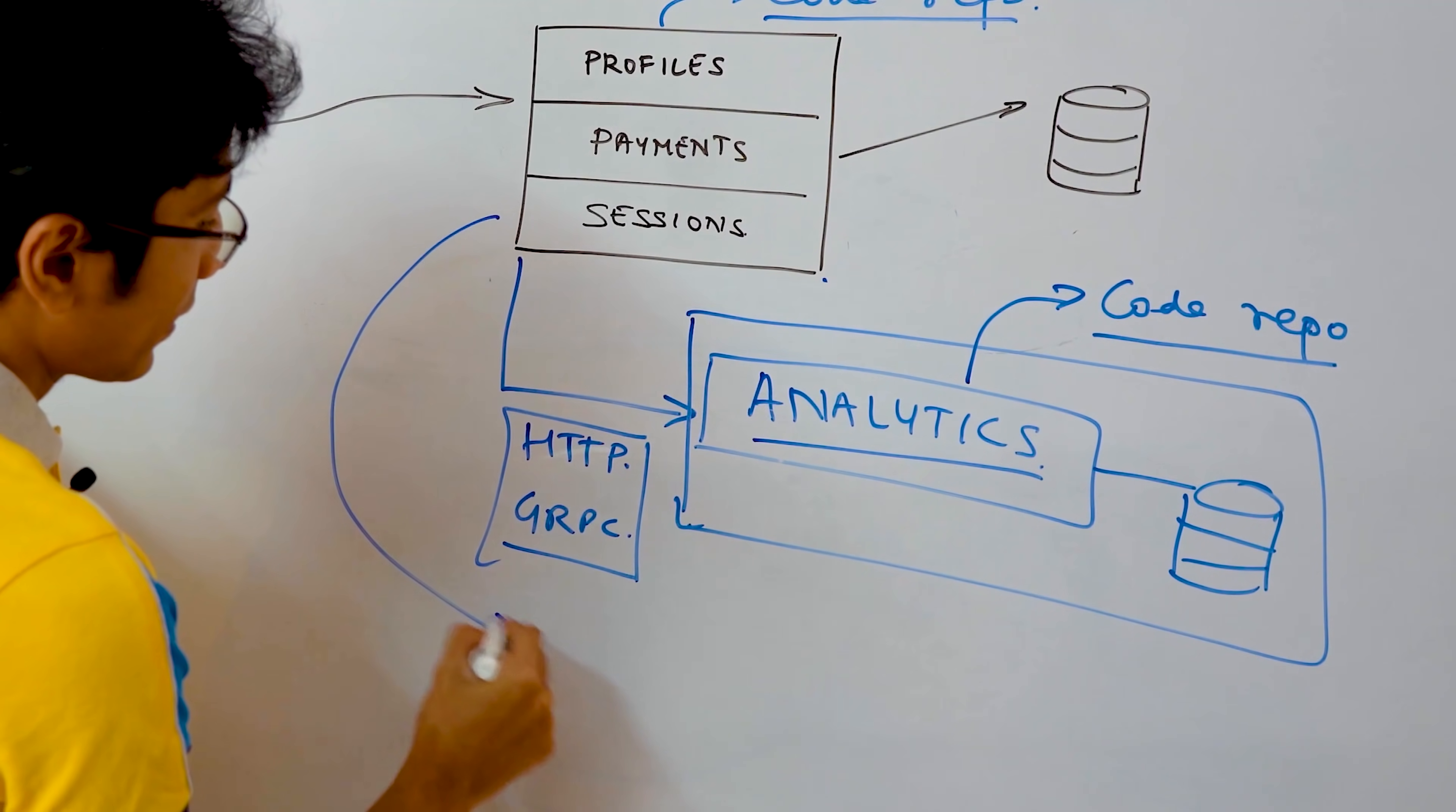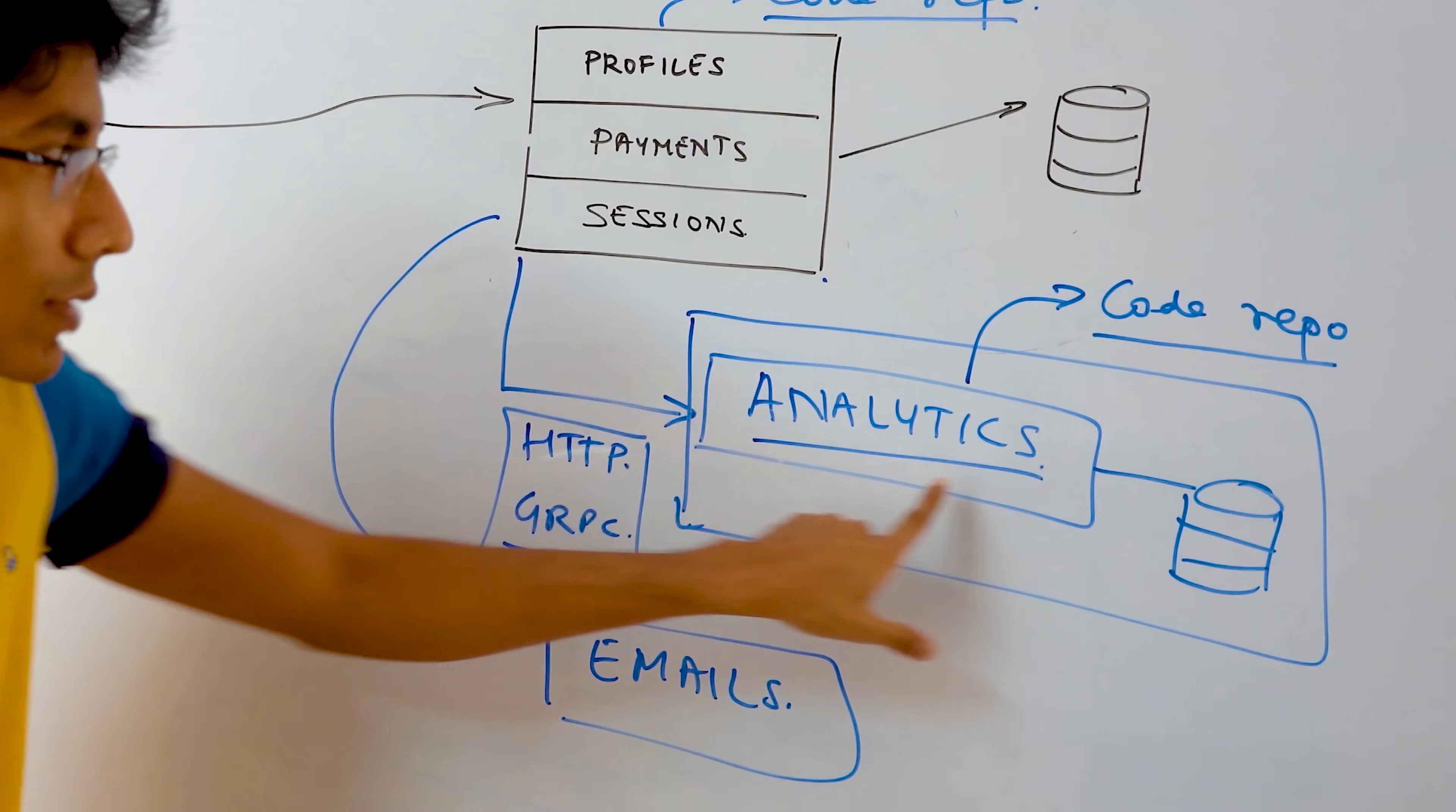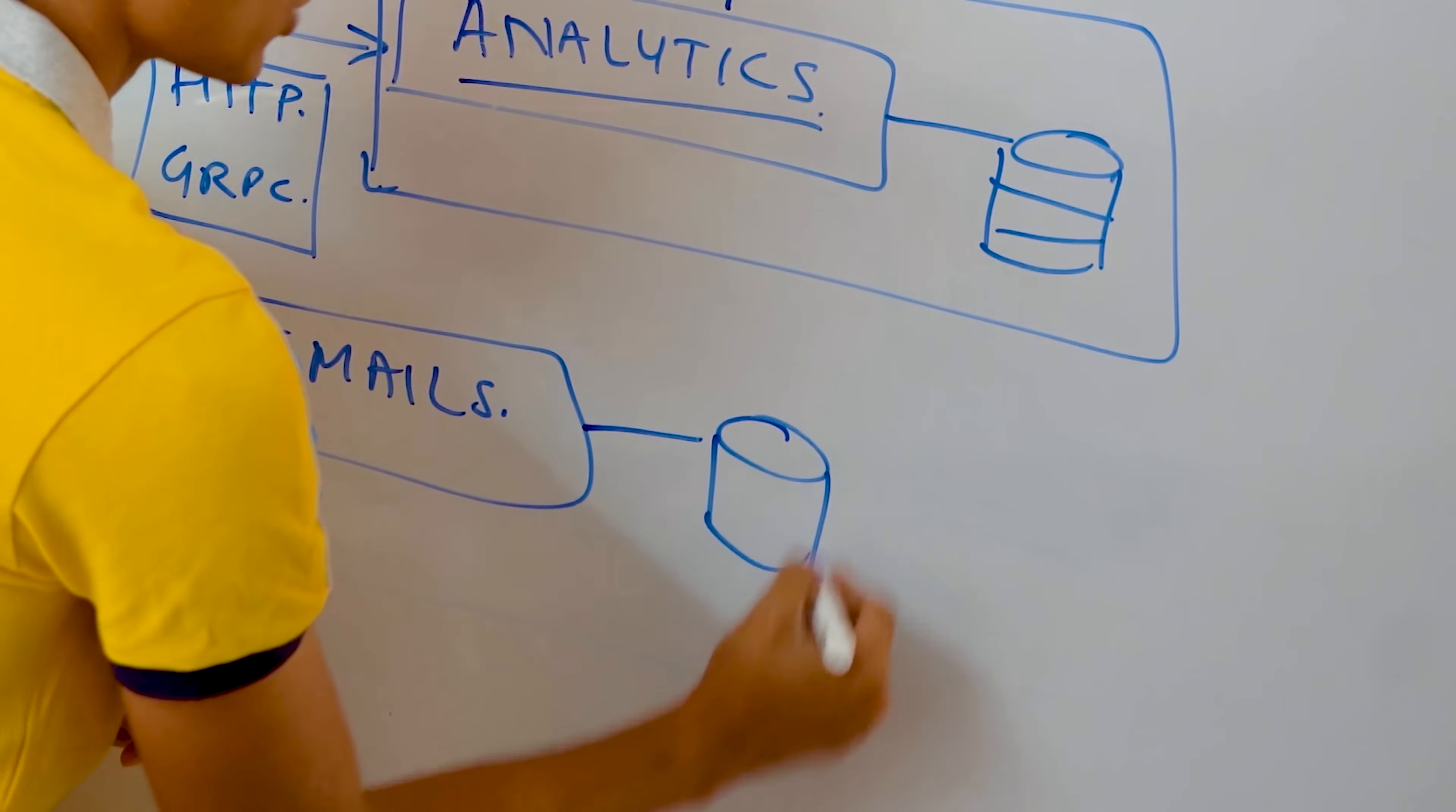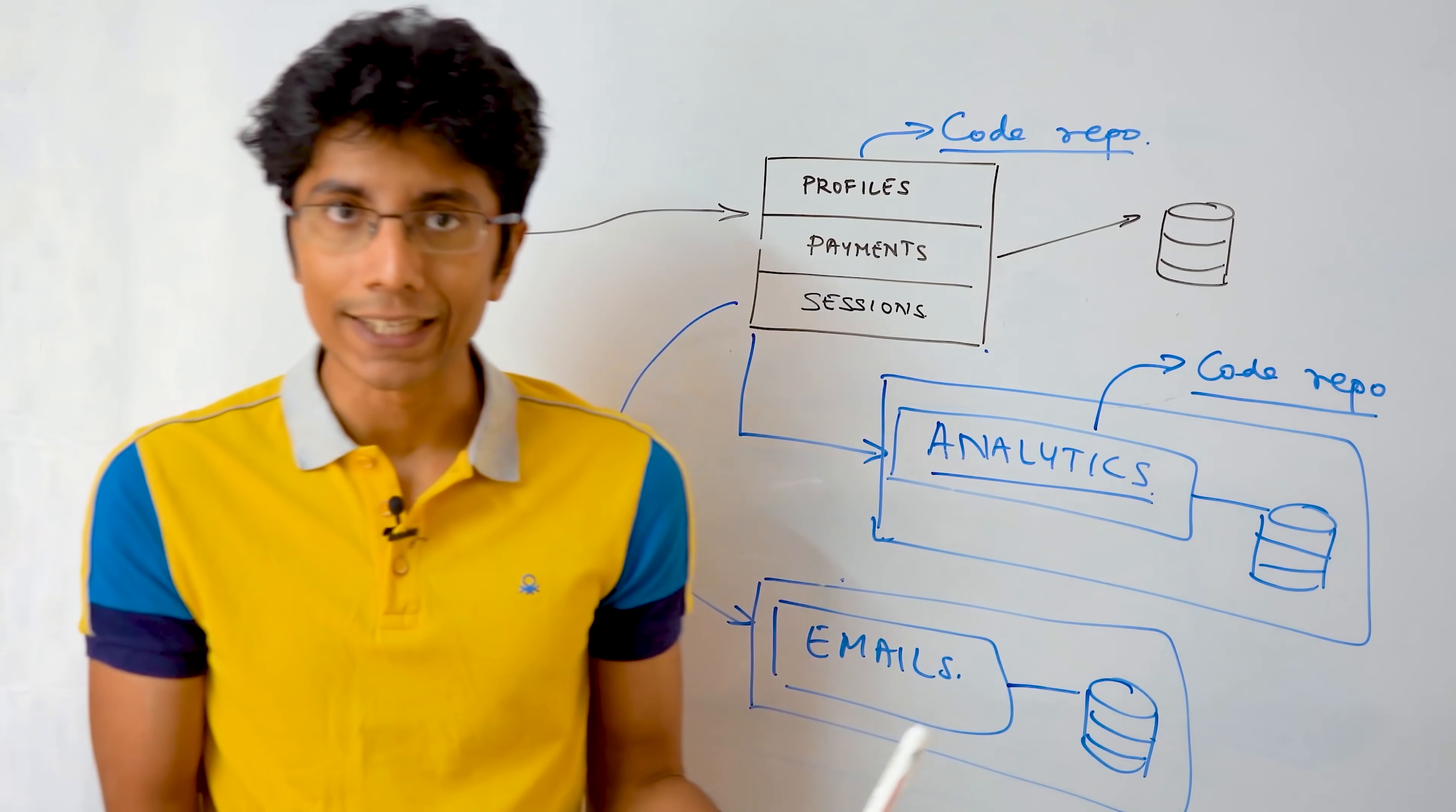Tomorrow, you might find that there's a functionality of sending emails, which is being used by payments, being used by profiles, being used by analytics. There's different emails that you need to send. So you separate that out into a separate service. By doing this, what happens is we need to now bring in some infrastructure changes to make addition of these services easy.